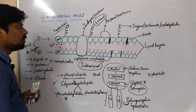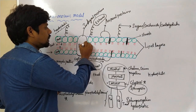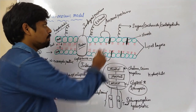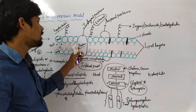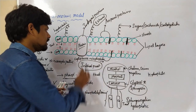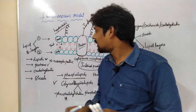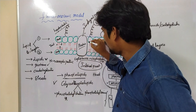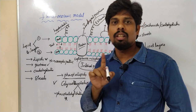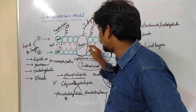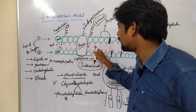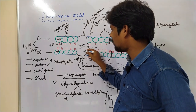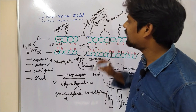Coming to the proteins: proteins present in the plasma membrane are divided into two types. One is peripheral protein and the other is embedded protein, called integral protein. Proteins that contain hydrophobic amino acids are embedded into the hydrophobic interior of the plasma membrane — these are called integral proteins.